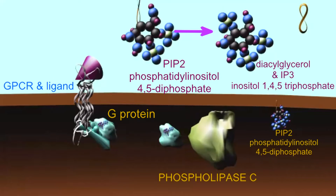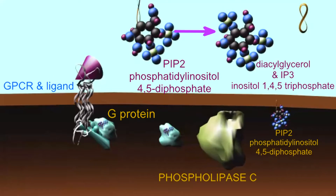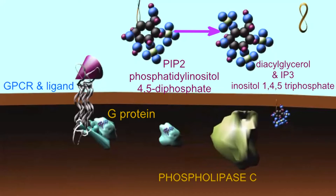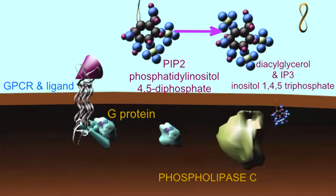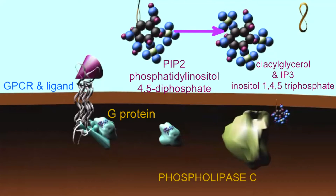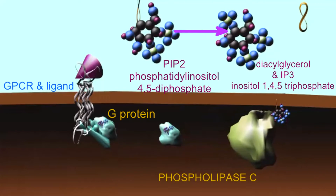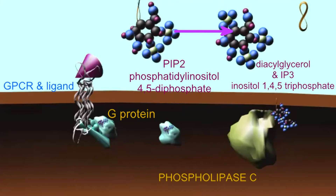into a lipid, which is cleaved from this precursor, producing diacylglycerol and the second messenger IP3, inositol-1,4,5-triphosphate.